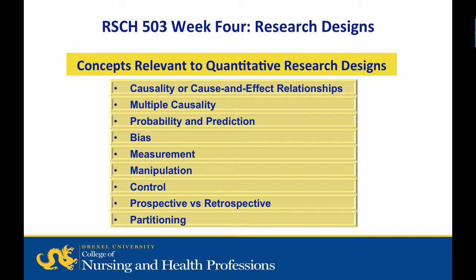Eight, prospective versus retrospective — terms used to reference timing of data collection. And nine, partitioning — a strategy in which the researcher analyzes the subjects according to a variable that could be considered dichotomous, but actually has several different values.